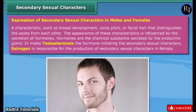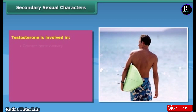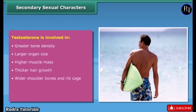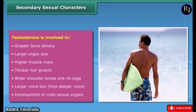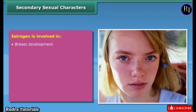The appearance of secondary sexual characters is influenced by the secretion of hormones — chemical substances secreted by the endocrine glands. In males, testosterone is the hormone initiating the secondary sexual characters. Estrogen is responsible for the production of secondary sexual characters in females. Testosterone is involved in greater bone density, larger organ size, higher muscle mass, thicker hair growth, wider shoulder bones and rib cage, a larger voice box with a deeper voice, and development of male sexual organs.